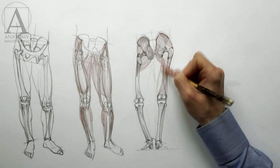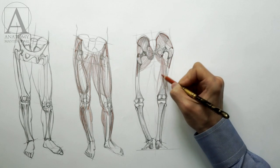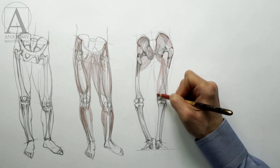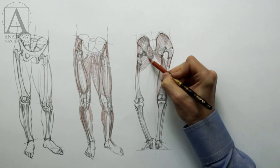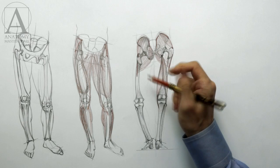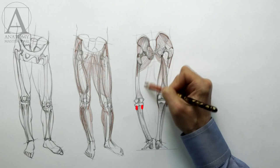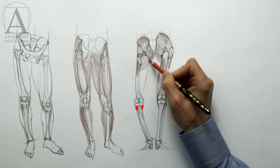The hamstring group consists of three muscles. They all originate from the sitting bone of the pelvis. The hamstring muscles insert, via tendons, into both sides of the shin bone and calf bone below the knee joint.